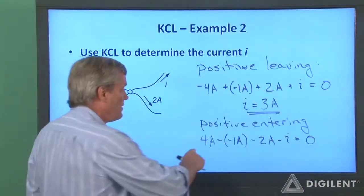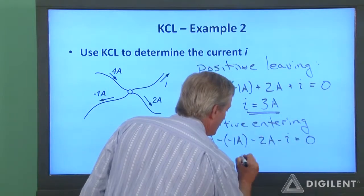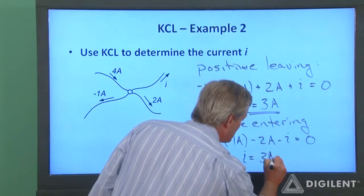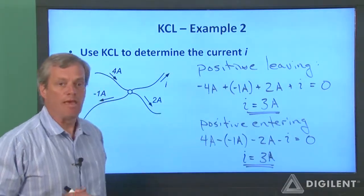Now we have 4 plus 1 is 5, minus 2 is 3. If I take I to the other side, I is still 3 amps. We get the same result regardless of which assumption we make.